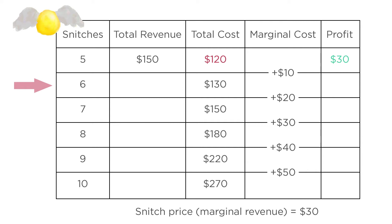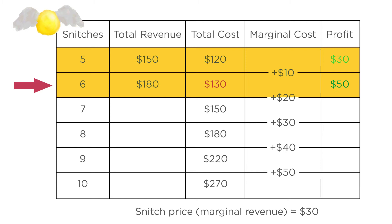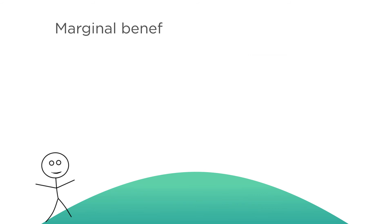Should the firm go ahead and manufacture the sixth snitch? The marginal cost of producing that sixth snitch is the change in total costs going from five to six, or $10. But the firm can sell that snitch for $30, which is more than the additional $10 it costs to make it, so the firm makes a profit on that unit. Revenues are now six times $30, or $180, and costs are $130, so profit is $50 — more than the $30 in profit before. The marginal benefit is greater than the marginal cost, so profits are increasing, and the firm should keep climbing up that hill.